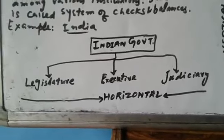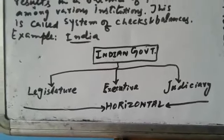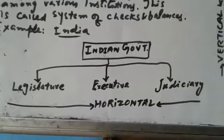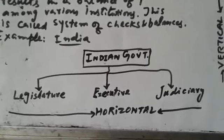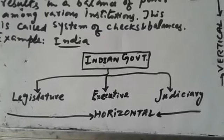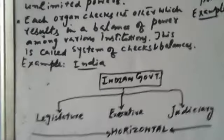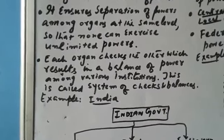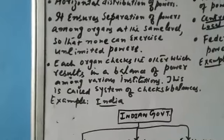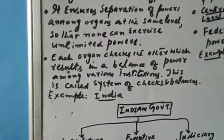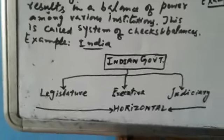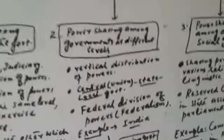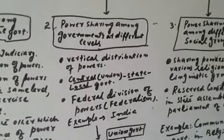Horizontal power sharing ensures separation of powers among organs at the same level, so that none can exercise unlimited power. Each organ checks the other, which results in a balance of power. This system is called checks and balances.